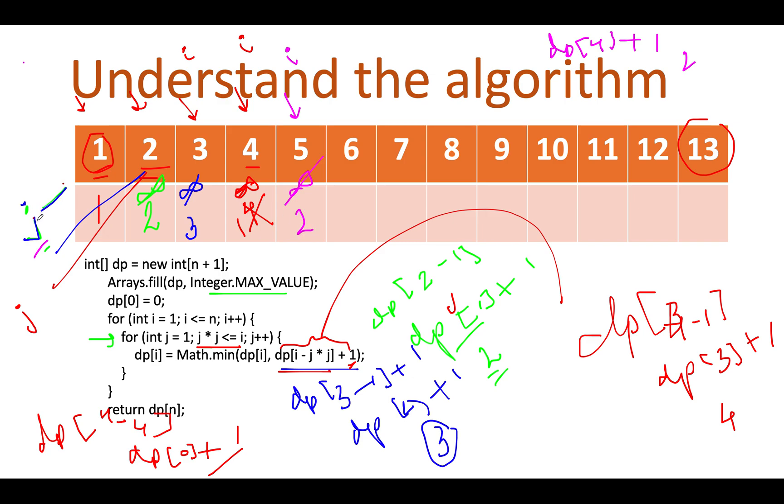Let's continue the process. Next, I point j to two. What is the expression that I'll get? dp of five minus two square, which is four. So I get dp of one. dp of one plus one will give me the complete expression. dp of one turns out to be equal to one, one plus one is two. So this again leads to two, two is equal to two. I'll not do any replacement.